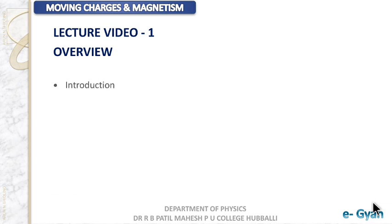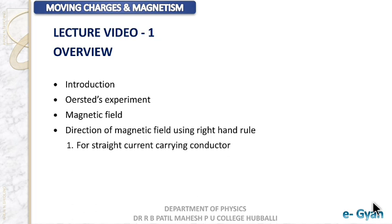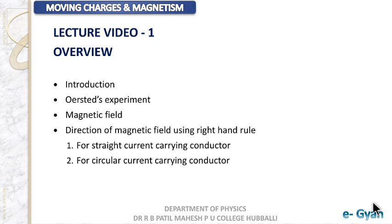The overview of the discussion will begin with an introduction. After introduction we are going to see Oersted's experiment. Oersted is a pioneer in this aspect of moving charge and magnetism. After that we have magnetic field, then the direction of magnetic field using the right hand rule, and we will apply the rule for both a straight current carrying conductor and a circular current carrying conductor.